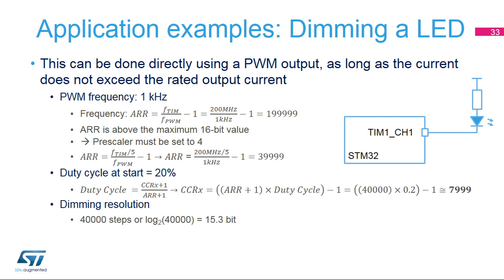When doing the ARR value computation with no prescaler and a timer operating frequency of 200 MHz, the result is 199999, which is above the 16-bit range that can be used with timer 1. The timer prescaler must be set to 4 to have the timer operating at 40 MHz, and this results in a valid value of 39999 for the ARR register.